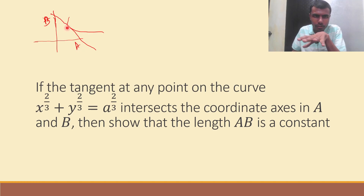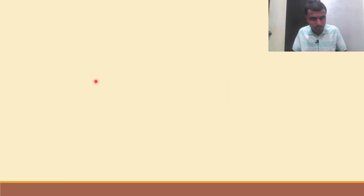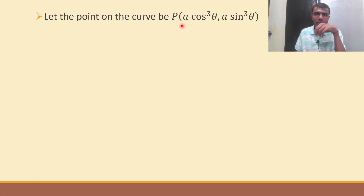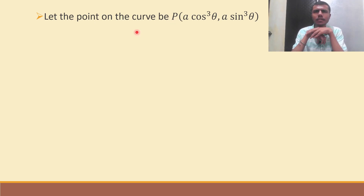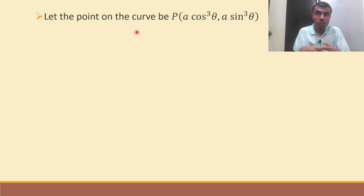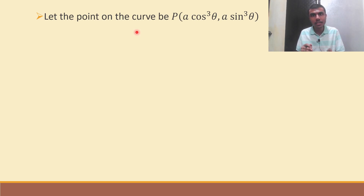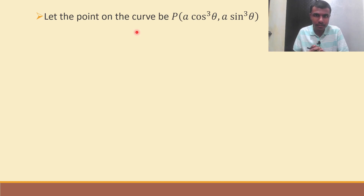First I need a point on the curve. Let the point on the curve be P = (a·cos³θ, a·sin³θ). Why am I taking this one exactly? Why a·cos³θ and a·sin³θ? Don't mug it up, guys — think about the answer.